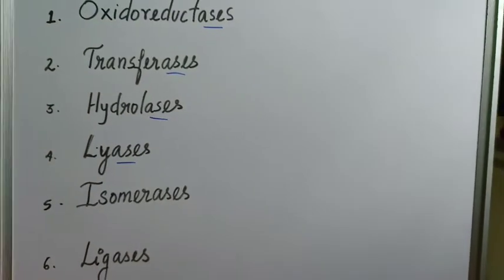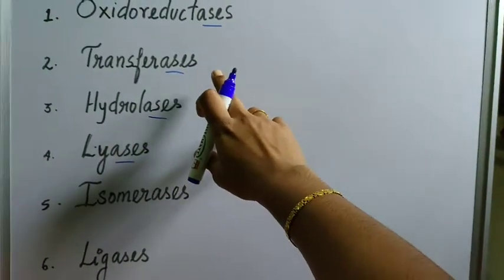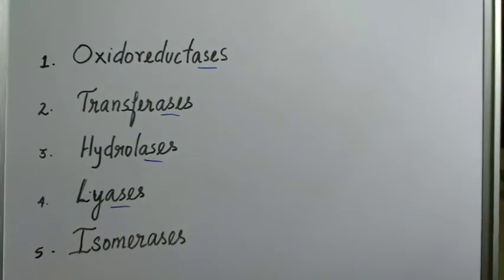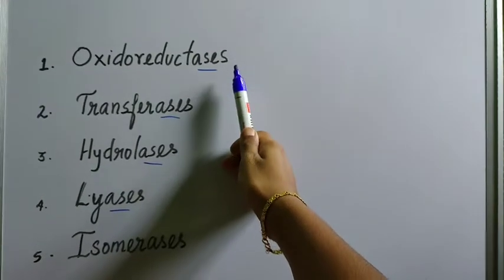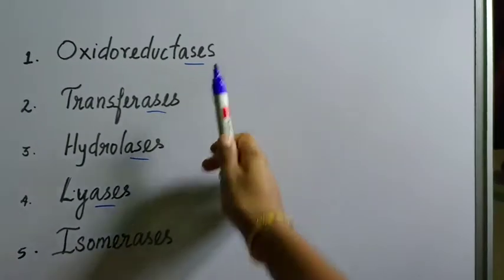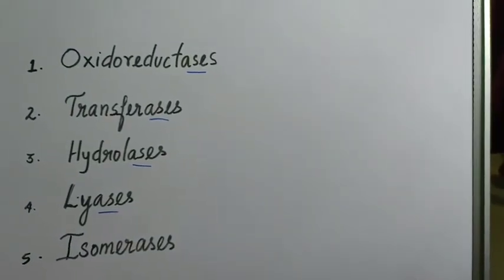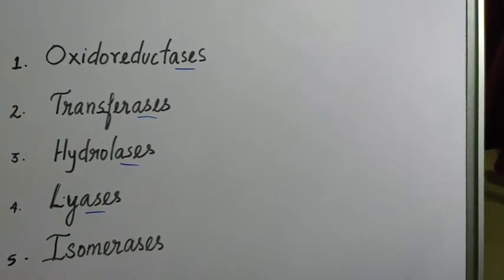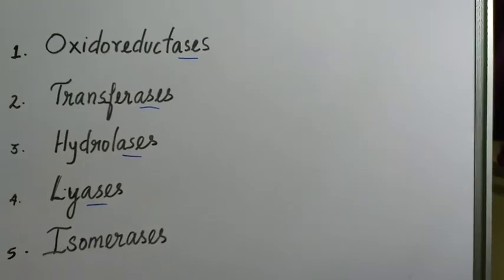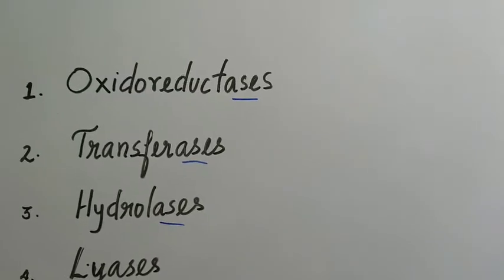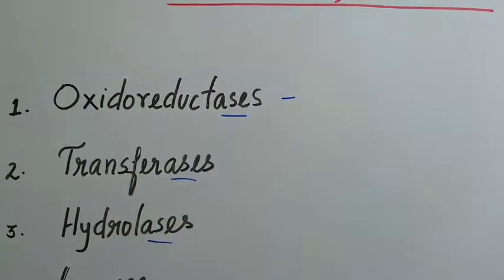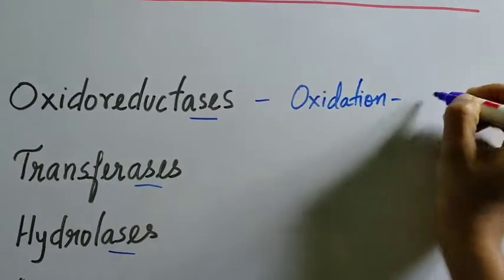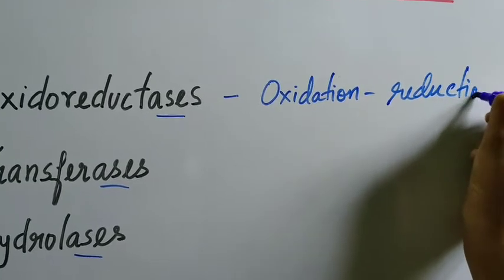The six major classes of enzymes are: oxidoreductases, transferases, hydrolases, lyases, isomerases, and ligases. Let us look at each one of them. Oxidoreductases are enzymes which are involved in oxidation-reduction reactions. That is, any reaction which is carrying out an oxidoreduction reaction — in those reactions, the oxidoreductases take part.